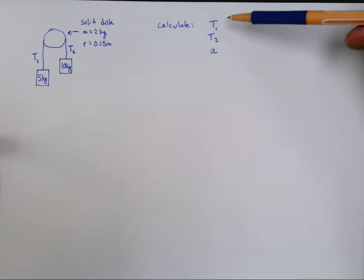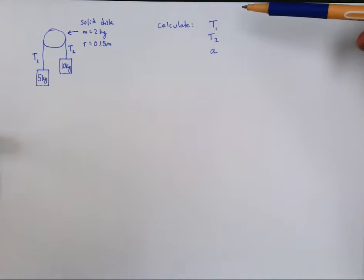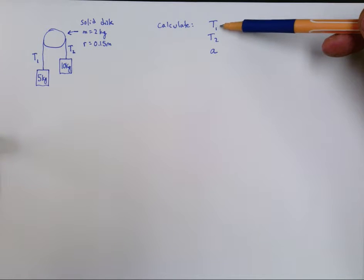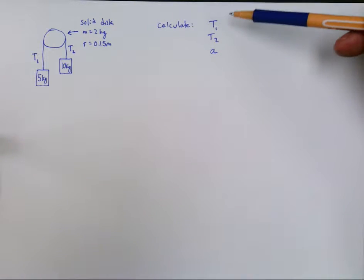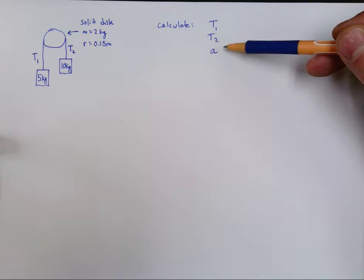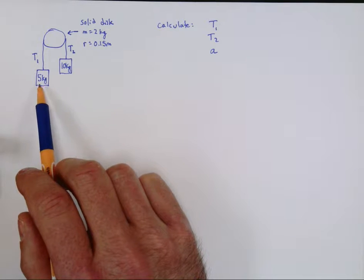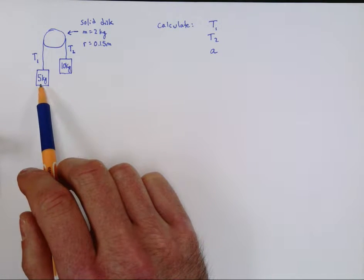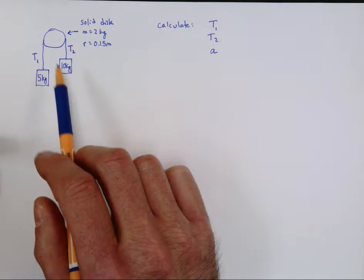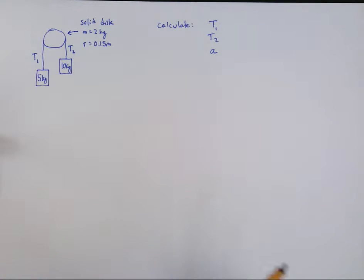Here's what we're going to calculate: two different tensions and the acceleration of this system. Everything is going to have the same acceleration because everything's tied together. We have three unknowns, which means mathematically we need three separate equations. We'll do an acceleration equals net force over mass equation for the 5 kg and the 10 kg masses, and our third equation will be a torque equation for the pulley.